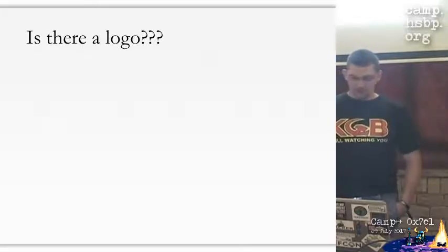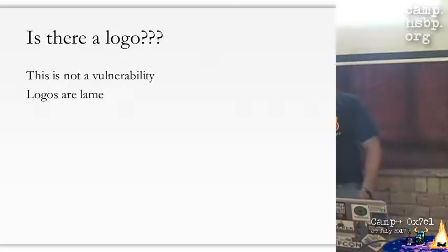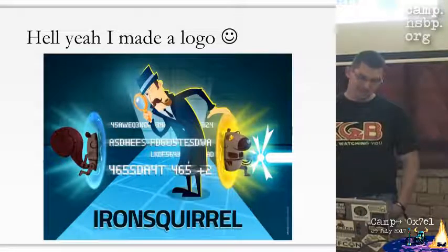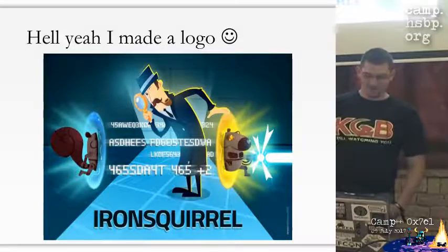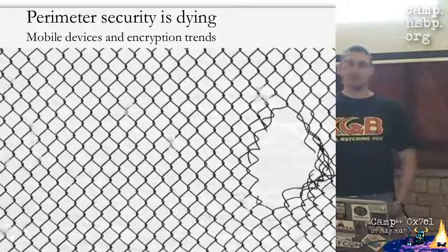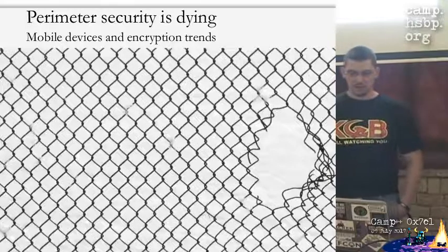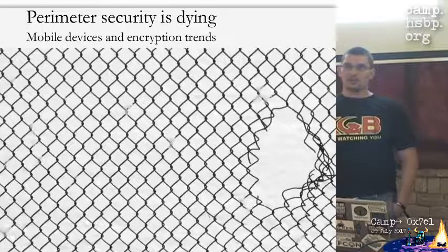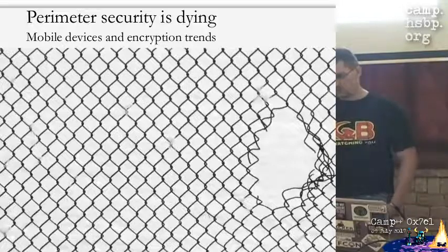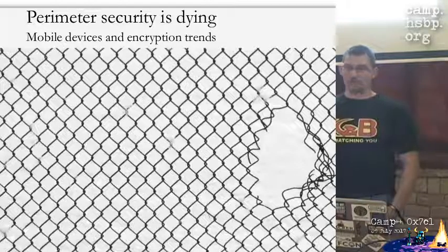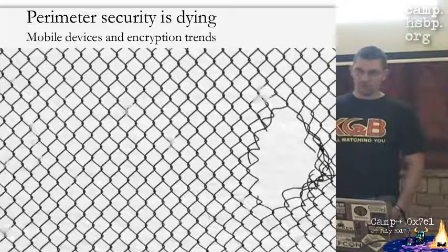Is there a logo for Iron Squirrel? This is not a vulnerability and we know logos are lame, so the logical answer should be no - but I created one with help from a friend. Now let's look at the big picture. I think one important thing we must recognize is that perimeter security is dying - there is no perimeter nowadays. With all the mobile devices and everything being encrypted, perimeter defenses like next-generation breach detection or IDS systems are going to die, because they cannot see what's really happening.